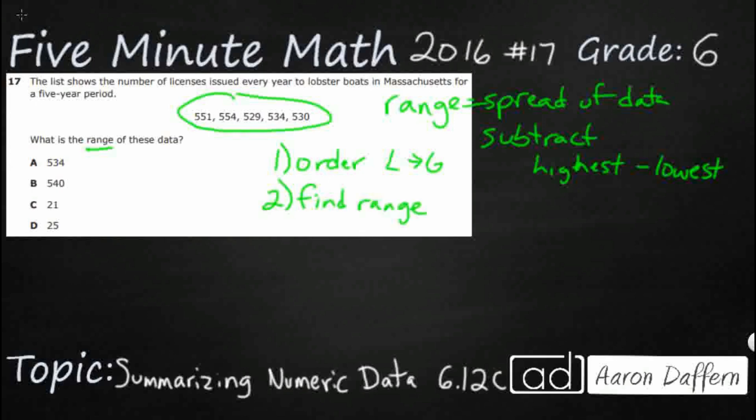Let's see how far apart this data is from the lowest number to the highest number. We need to put these numbers in order and that's where we need to bring in other skills like comparing and ordering. So even though this 551 is the very first number that's listed in this particular set here, it is not the lowest number. Our lowest number is going to be 529.